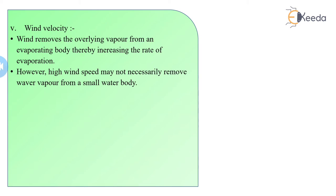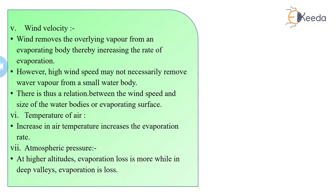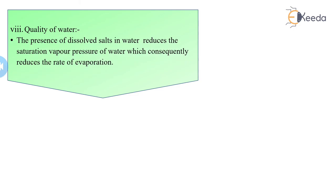There is thus a relation between the wind speed and size of water bodies or evaporating surface. Next factor is temperature of air. Increasing air temperature increases the evaporation rate. Atmospheric pressure: at higher altitudes, evaporation loss is more; in deep valleys, evaporation is less. Quality of water: the presence of dissolved salts in water reduces the saturation vapor pressure of water, which consequently reduces the rate of evaporation.